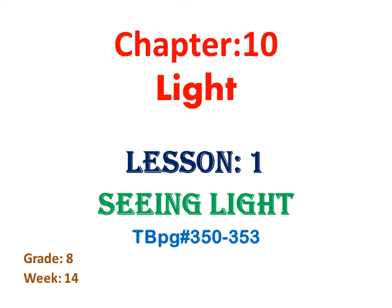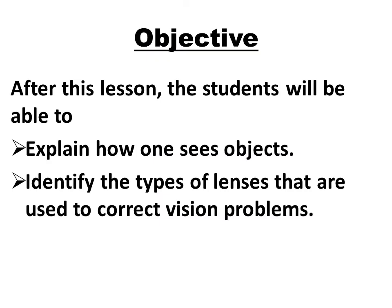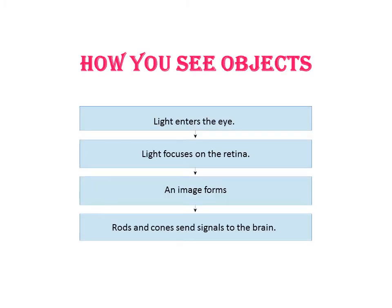Grade 8, Week 14, Chapter 10: Light, Lesson 1 — Seeing Light. Textbook pages 350 to 353. Welcome, dear students. I'm your physical science teacher, Mr. Dimish. From this lesson we are going to learn about how one sees objects and identify the types of lenses that are used to correct vision problems.